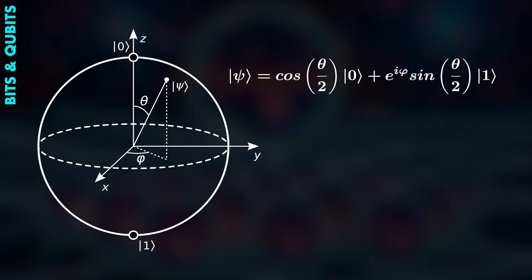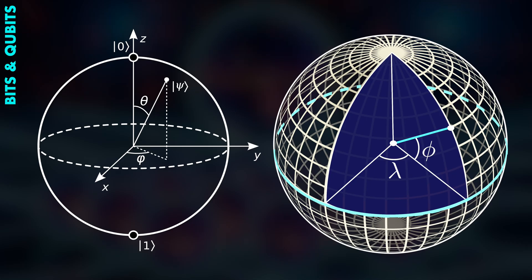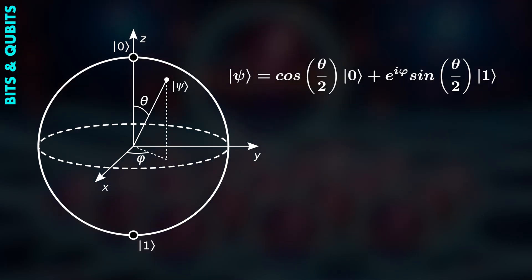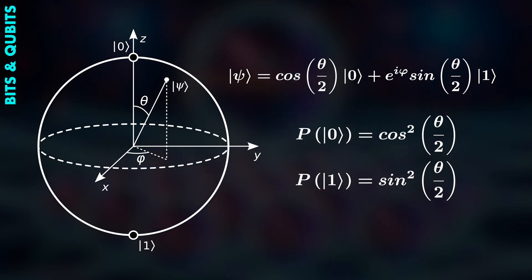The position of the vector in the sphere is described by two angles, similar to longitude and latitude on the earth. But with qubits, these two angles can be used to calculate the probabilities to measure zero or one.